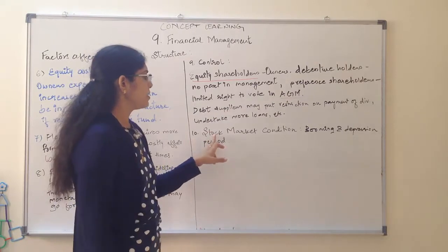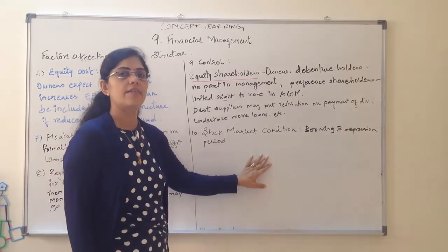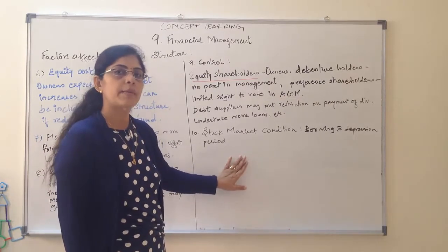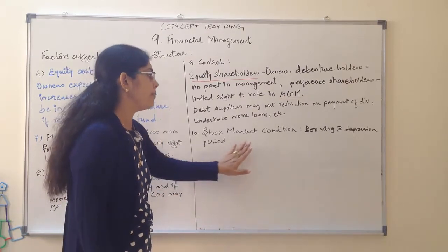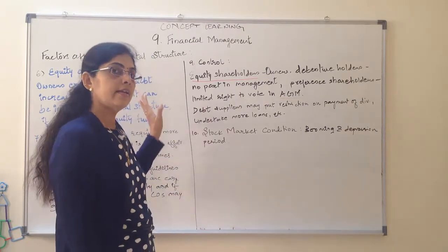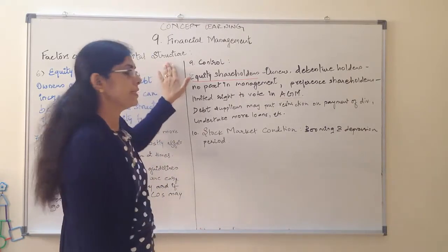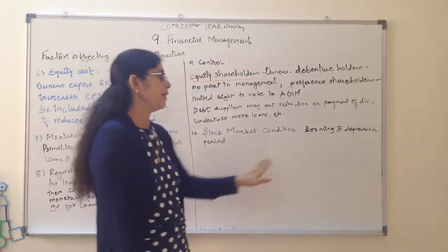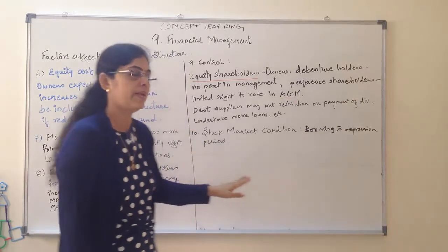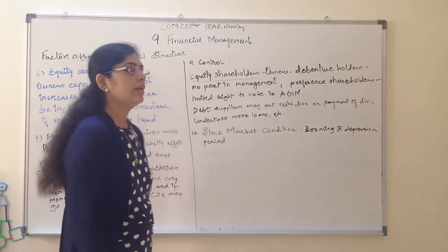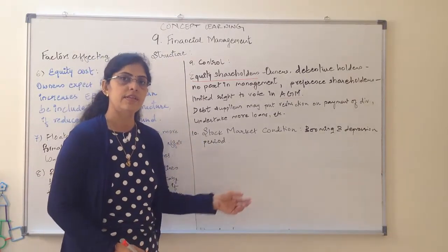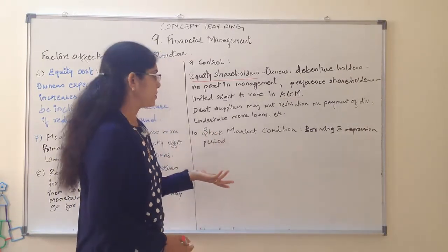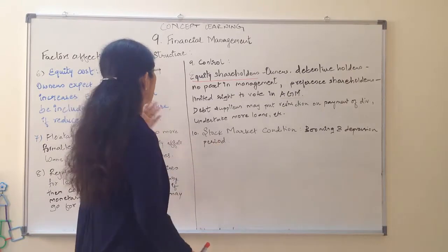The last factor is stock market condition. Market conditions are of two types: booming and depression. The company has to analyze the market condition and then design the capital structure accordingly. The financial manager must study whether the market is booming or depressed, and then decide whether to go for equity shares or borrowed funds. These are the factors affecting capital structure.